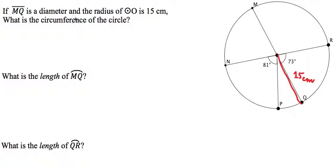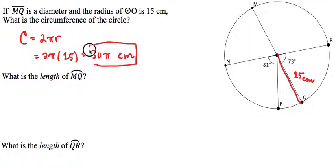What is the circumference of the circle? Well, remember that the circumference formula is C equals 2π times the radius. So we can make our substitutions here and substitute in 15 for the radius and that will give us 30π centimeters. That's the circumference.